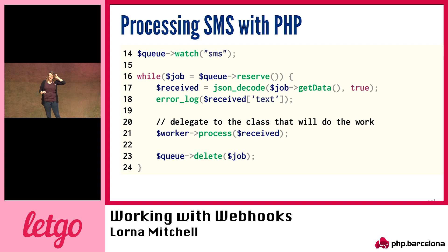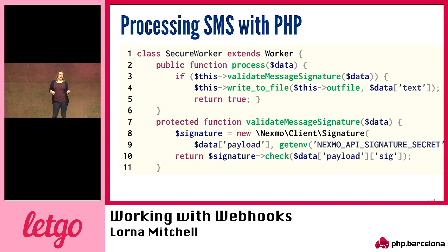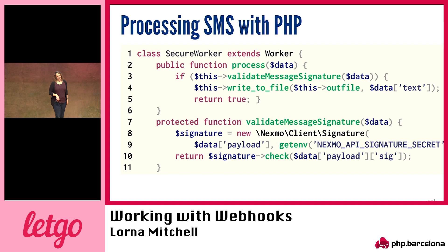Here's a very simple worker — because it has to fit on the slide. I'm going to watch the queue, then run a while loop: is there a job? Reserve it, process it, delete it. If I reserve a job, something goes wrong, and my process exits, Beanstalk after a while will say that didn't get processed and let something else reserve it — it's a configurable timeout on the reserve. The process looks like this in the SecureWorker class: validate the message signature, then write to the file. Seriously, check your message signatures. Let's see that in action.